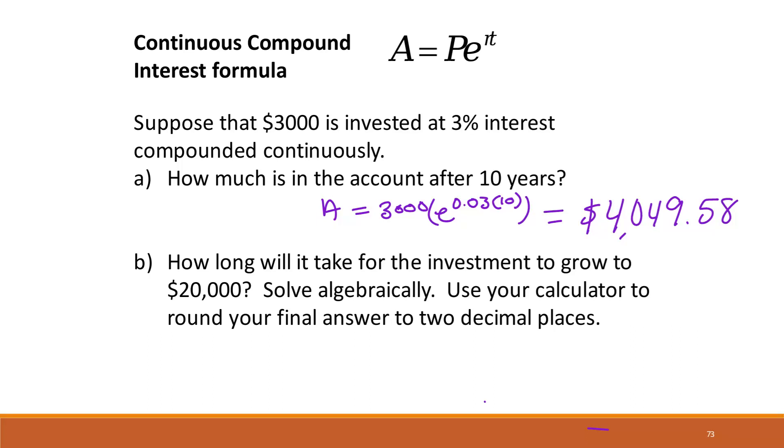Then part b says how long will it take for the investment to grow to $20,000. So this time we're putting 20,000 in for A and we're looking for time t again. And so we can divide both sides by the 3,000 like we did before to isolate that term. It doesn't divide into a pretty number, so I'm just going to leave it as a fraction.